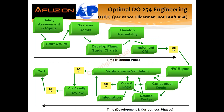The optimal DO254 engineering route: on top is the planning process, on the bottom is development and the correctness process. It starts with safety in the upper left through process assurance — develop those system requirements, plans, standards, traceability, implement configuration management, and have our first SOI, somewhat similar to SSR. Then develop hardware requirements in parallel with conceptual design, detail design, logic, and hardware implementation — SOI 2. Then complete the verification and validation — SOI 3. Then, did your project have any changes? Are you ready for flight testing — SOI 4 — and certification?